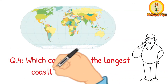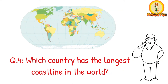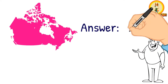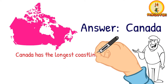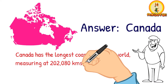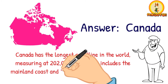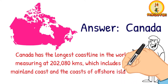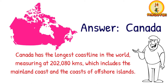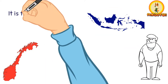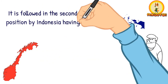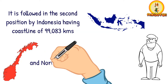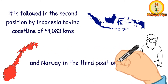Which country has the longest coastline in the world? The answer is Canada. Canada has the longest coastline in the world, measuring at 202,080 kilometers, which includes the mainland coast and the coasts of offshore islands. It is followed in second position by Indonesia with 99,083 kilometers, and Norway in third position with 58,133 kilometers.